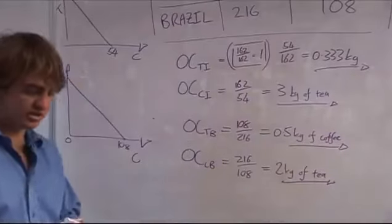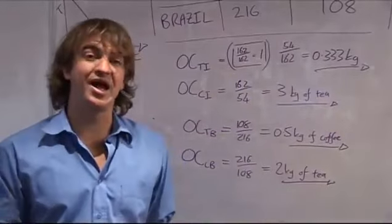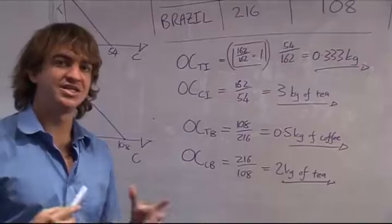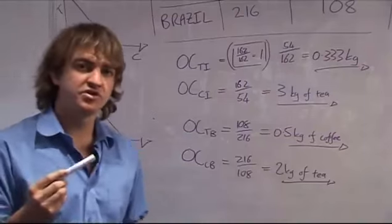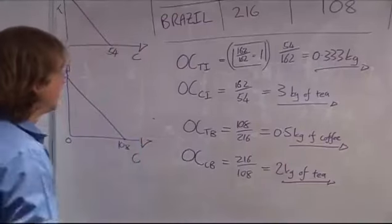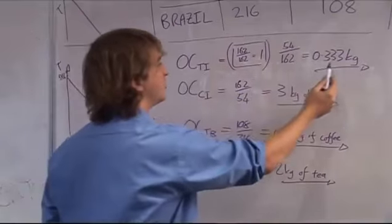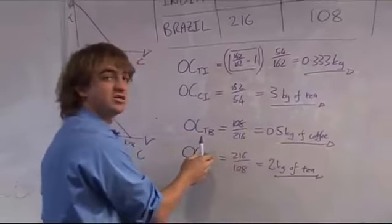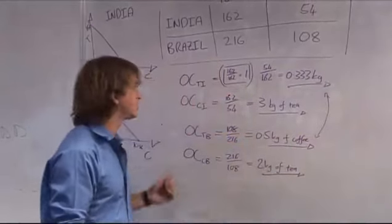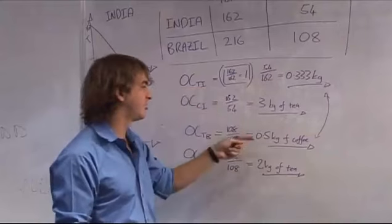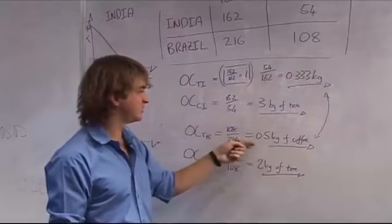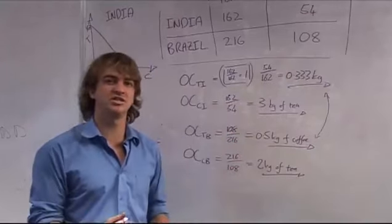Now we've got all our opportunity costs, so we can work out our comparative advantages. Which country has a comparative advantage in tea production? To work out comparative advantage, you must see which country has a lower opportunity cost of tea. The opportunity cost of tea in India is 0.333, whereas the opportunity cost of tea in Brazil is 0.5. The opportunity cost of producing tea in India is lower than in Brazil, so India has a comparative advantage in tea production.